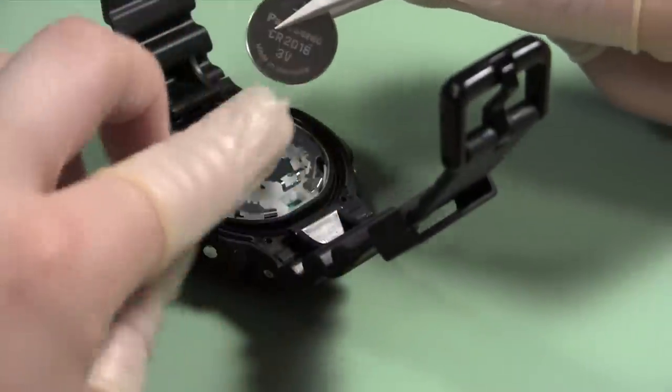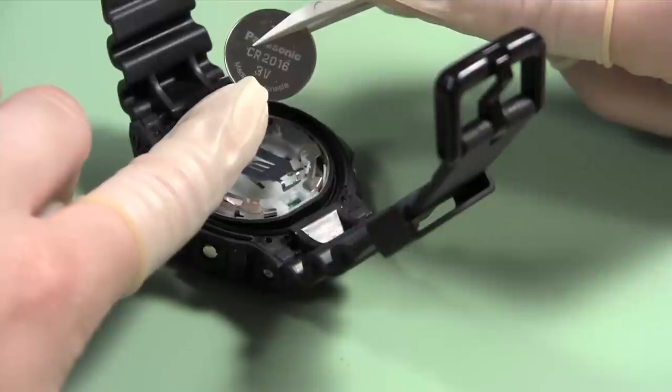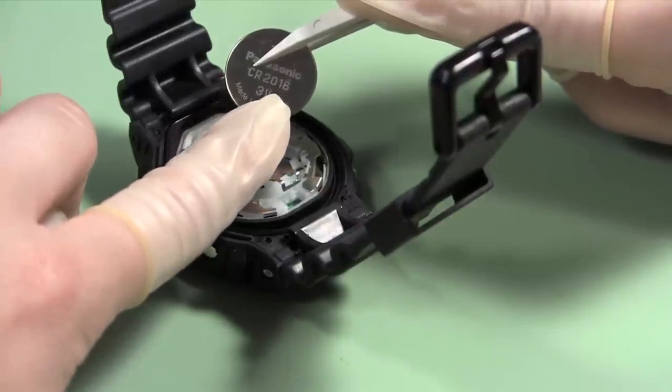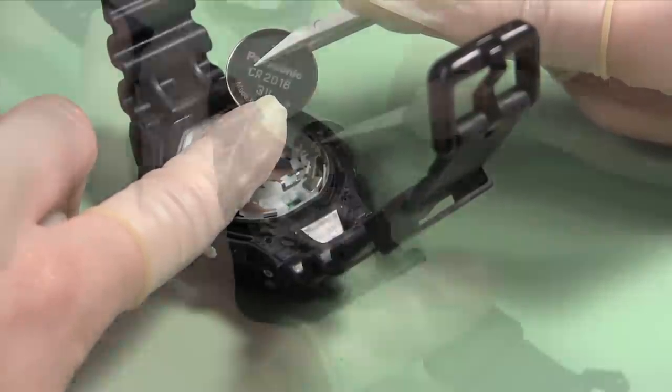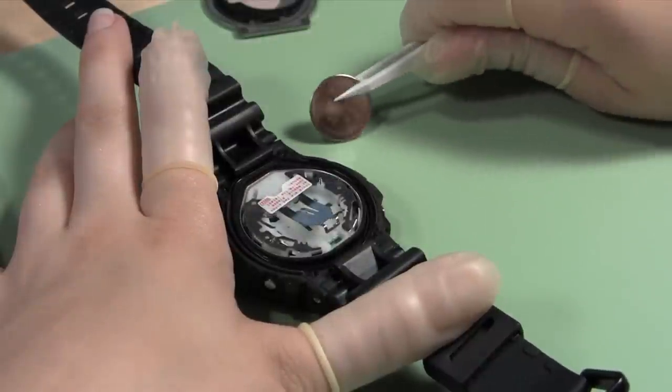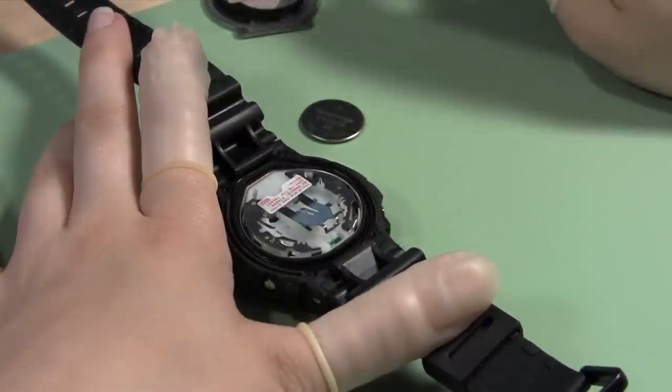Examine the battery and find the replacement number on it. Lithium batteries usually have a four digit number preceded by two letters, generally CR. Set the old battery aside in case you need it again before you are done working on the watch.